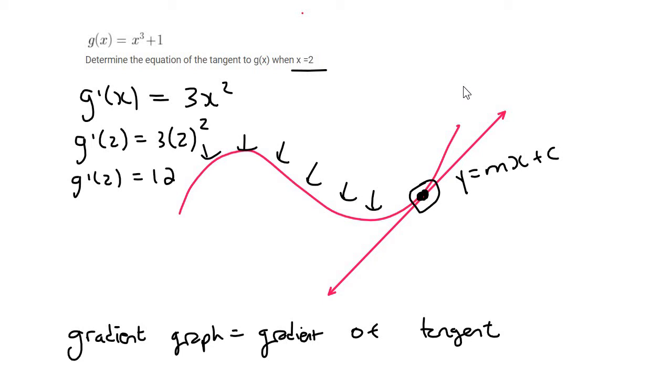So that means that the gradient of this graph, this one over here, at the point where x is 2, is 12. But that's also where the tangent is touching the graph, and so the tangent is going to have a gradient of 12. So we can then say y equals 12x plus c.